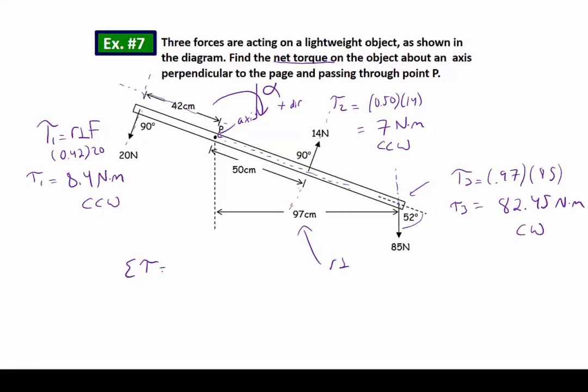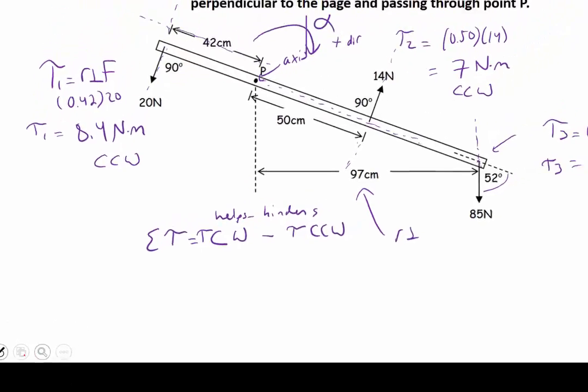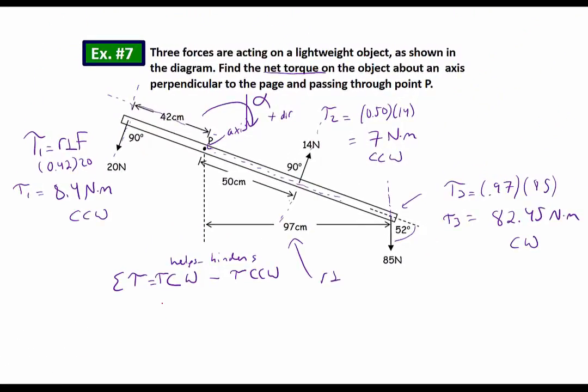I'm going to make the direction that's going to angularly accelerate in a positive direction. So I'm going to say the net torque is equal to help minus hinder. I'll put helps minus hinders. I've got all my torques going clockwise minus all my torques going counterclockwise. So I'm just going to figure out what that's going to look like. And my clockwise torques were torque 3 at 82.45 minus my counterclockwise torques.